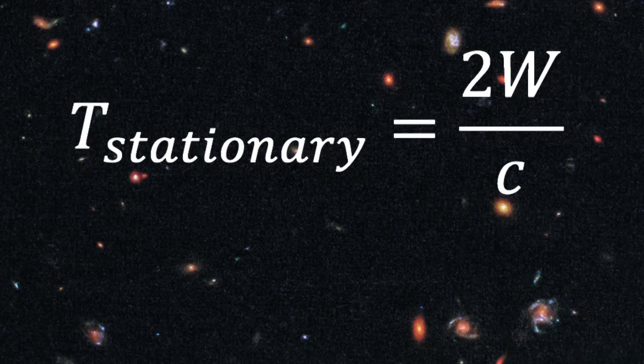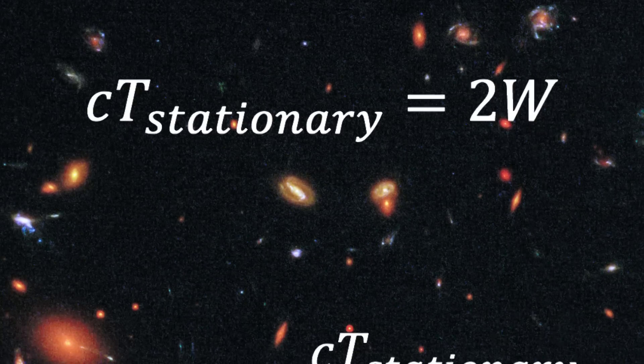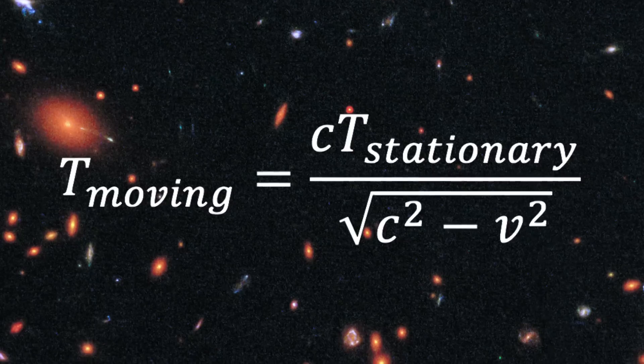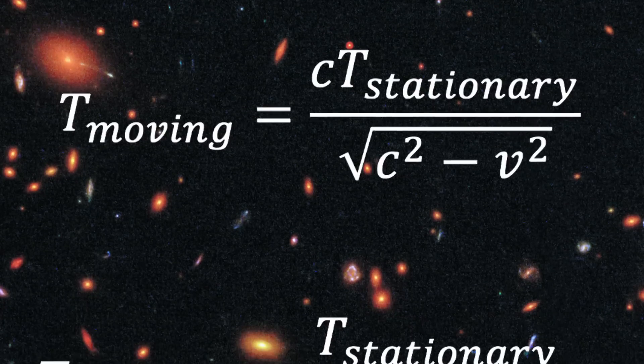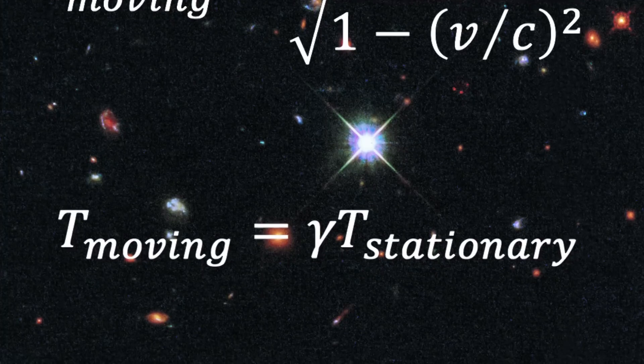Now, if we remember our equation for t stationary, we can do some simple algebra and come up with an equation for 2w, which we can then put into the t moving equation. And finally, we can factor out the c and we can finally put in the gamma. So that's where the gamma comes from, or at least that's one way to do it. There are lots of similar derivations.